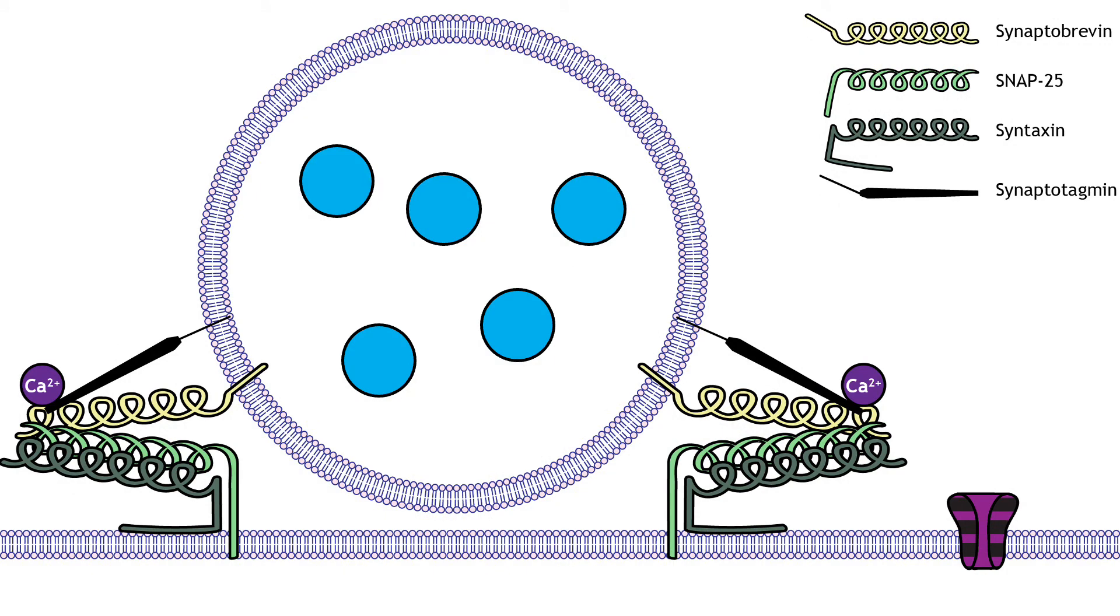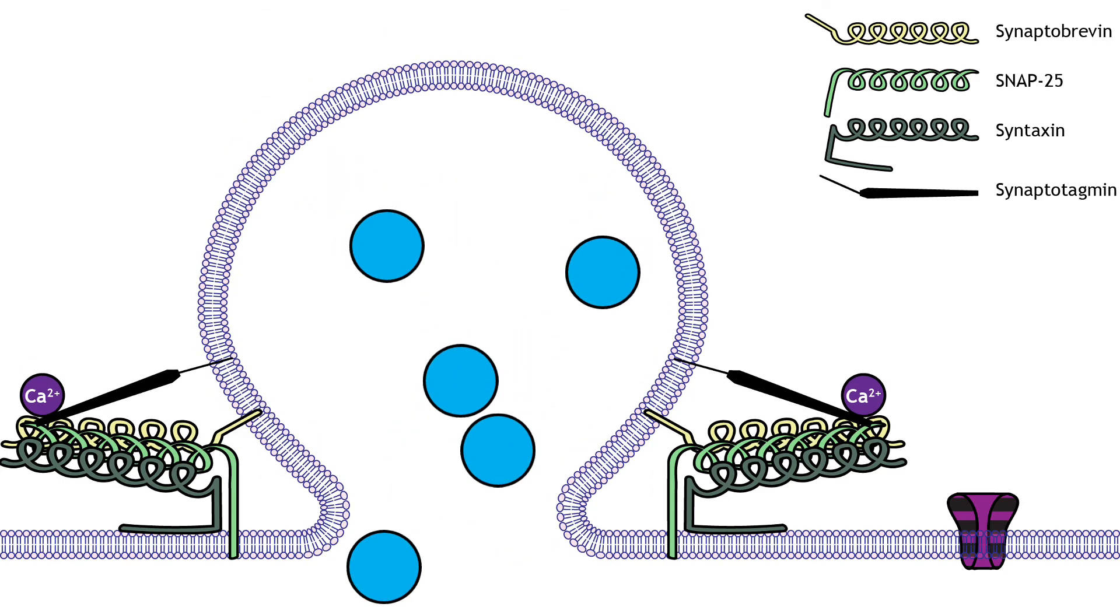Once synaptotagmin interacts with the SNARE proteins, the synaptic vesicle membrane fuses with the presynaptic terminal membrane, and the neurotransmitters are released into the synaptic cleft through exocytosis.